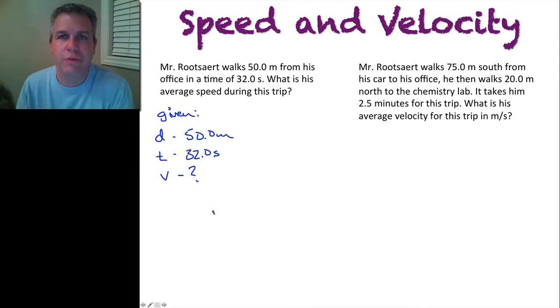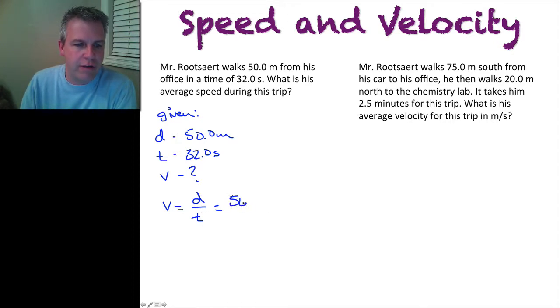Now what I always like to do is go and look at my data booklet, find the equation that I need. I'm going to find that speed is equal to distance over time. I'm not dealing with velocity or with a vector because I have distance and time. So now I just have to solve the equation. So 50.0 meters over 32.0 seconds.